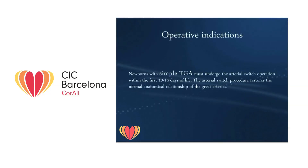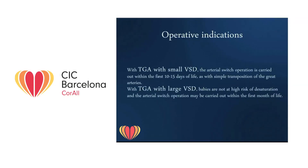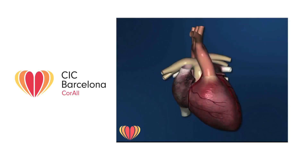Operative indications vary according to the anatomical type of transposition of the great arteries. Newborns with simple TGA must undergo the arterial switch operation within the first 10–15 days of life, which restores the normal anatomical relationship of the great arteries. With a small ventricular septal defect, the arterial switch operation is similarly carried out within the first 10–15 days. With a large ventricular septal defect, babies are not at high risk of desaturation and the arterial switch operation may be carried out within the first month of life.